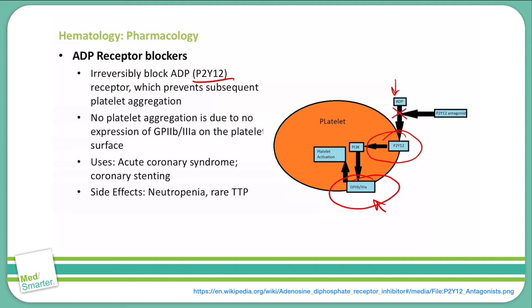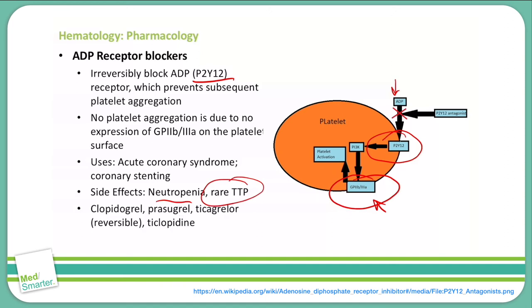Side effects for ADP receptor blockers include neutropenia, and we can also see TTP, which is thrombotic thrombocytopenic purpura. Examples of ADP receptor blockers include clopidogrel, which is also known as Plavix, prasugrel, ticagrelor, and ticlopidine.